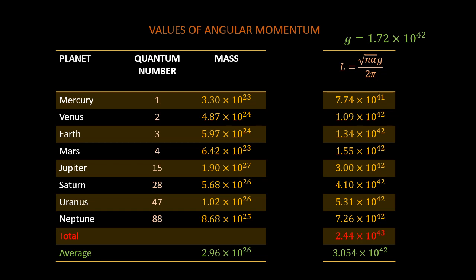A little remark about the quantum numbers. Notice how it starts off smoothly from 1 through 4, that is, from Mercury to Mars and then jumps to 15 for Jupiter and then to 28 and so on.